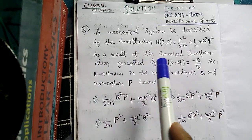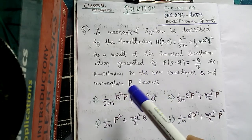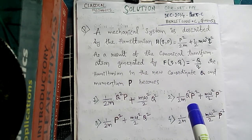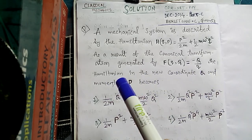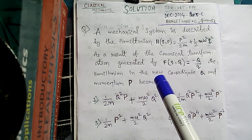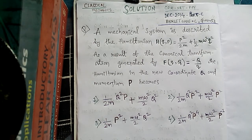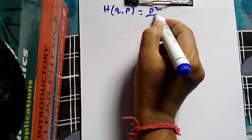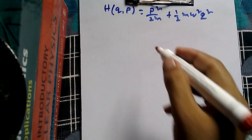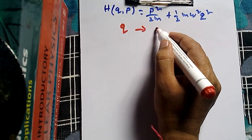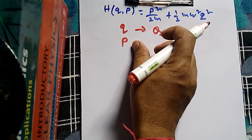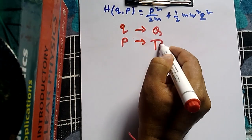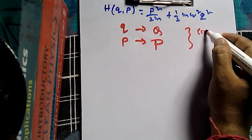We have been given the Hamiltonian, and as a result of a canonical transformation using a generating function, we get a new Hamiltonian. The new Hamiltonian is a function of the new coordinate capital Q and new momentum capital P. The old Hamiltonian is P squared by 2m plus half m omega squared Q squared. A canonical transformation maps old coordinate small q to new coordinate capital Q, and old momentum small p to new momentum capital P.